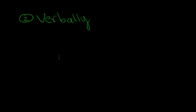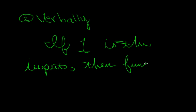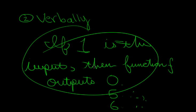The second way, Stuart says in his book, is verbally — you can represent a function verbally by a description in words. For example: if one is the input, then function f outputs, or yields, zero — or five or six or whatever output it produces. This is a verbal description.